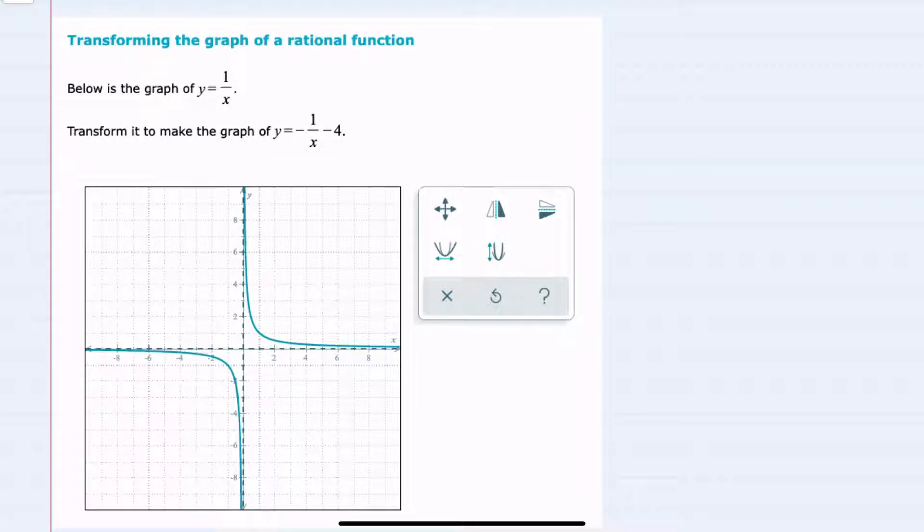In this video, I'll be helping you with the Alex problem type called transforming the graph of a rational function. We're given the graph of y equals 1 over x, and we're asked to transform it to make it the graph of y equals negative 1 over x minus 4.